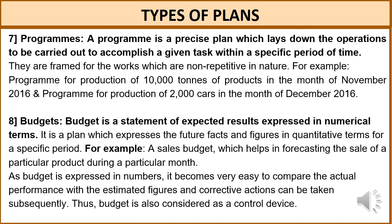The next type is budgets. A budget is a statement of expected results expressed in numerical terms. It is a plan which expresses future facts and figures in quantitative terms for a specific period. For example, a sales budget helps in forecasting the sale of a particular product during a particular month. Since budgets are expressed in numbers, it becomes easy to compare actual performance with estimated figures and take corrective actions. Budgets are statements of financial resources set aside for specific activities in a given period and are an important component of programs and projects. Thus, the budget is also considered a control device.